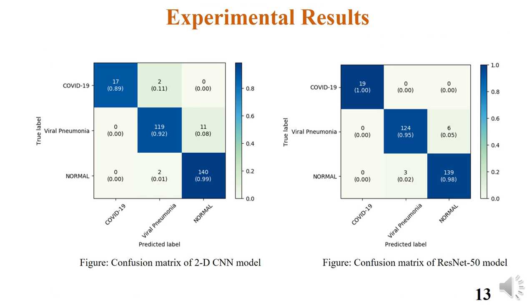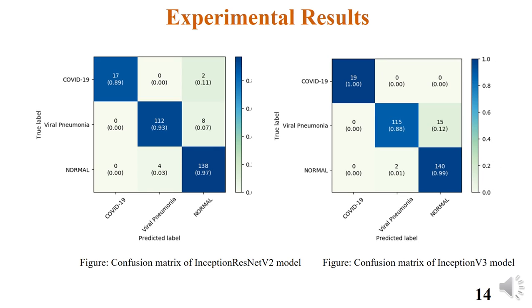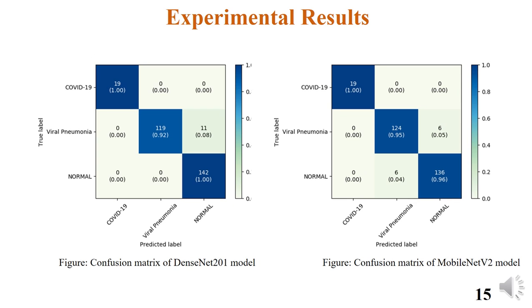Here are the confusion matrices for 2D CNN and ResNet-50. Compared to the 2D CNN, ResNet-50 is more effective in detecting COVID-19 cases. Comparing Inception-ResNet-V2 and Inception-V3, Inception-V3 is more effective in detecting COVID-19 cases. DenseNet outperforms MobileNet in detecting normal cases.